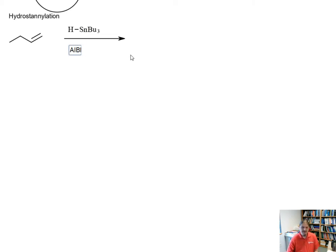I'm going to draw the structure of that in a moment. But as a radical reaction, it follows the same pattern of putting the tin on the less substituted position. Let me draw the structure of this azo-bis-isobutyronitrile.